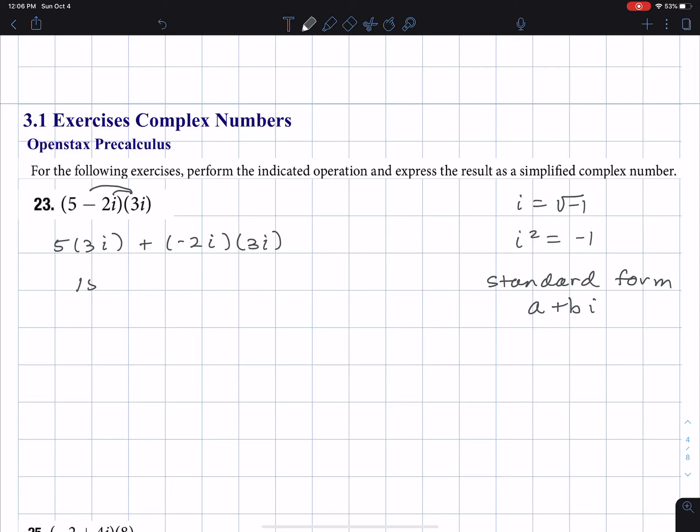5 times 3i is 15i, and then I multiply the negative 2 and the 3. That gives negative 6, and I multiply the i and the i. All I'm doing is I'm reordering, that's the commutative property, and then I'm grouping, which is the associative property.